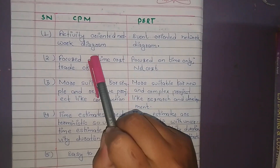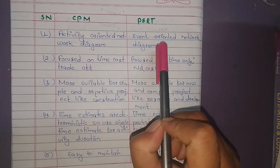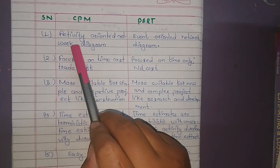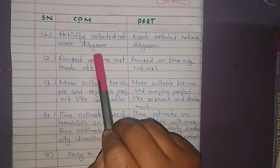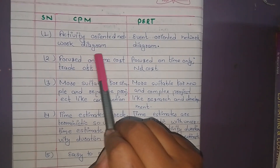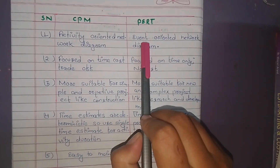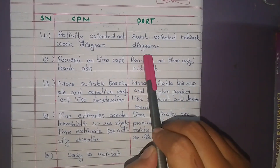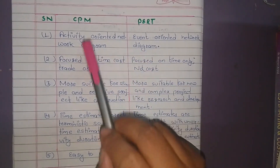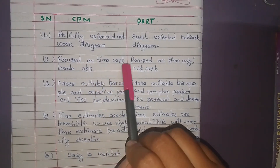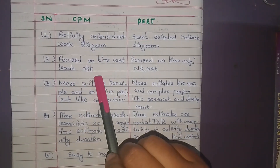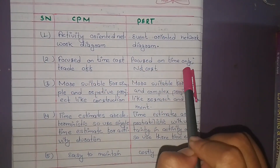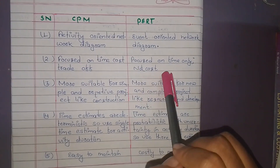The main difference between CPM and PERT is that CPM is an Activity Oriented Network Diagram, whereas PERT is an Event Oriented Network Diagram. CPM is focused on Time-Cost Trade Off, whereas PERT focuses on Time Only, not Cost.